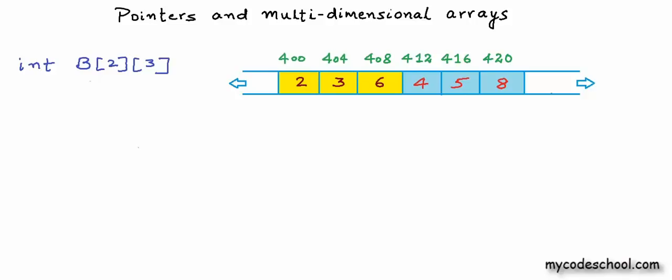What I have tried to show in this figure is how array b will be organized in memory. I have assumed that the starting address of the array is 400. Each cell storing an integer is a block of four bytes. Each byte in computer's memory has an address. I am drawing blocks of four bytes each and writing only the starting address of each block. You can imagine a block of four bytes like this — the starting address is 400, with each partition being one byte, so the next bytes have addresses 401, 402, and 403.